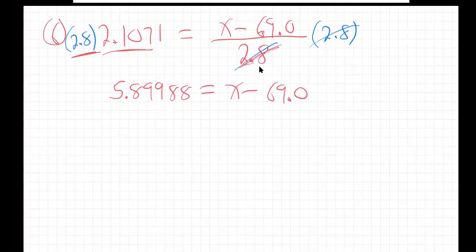Because the 2.8's canceled out, right? Last step, just add the 69.0 to both sides.